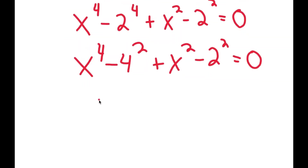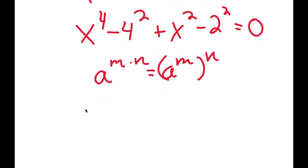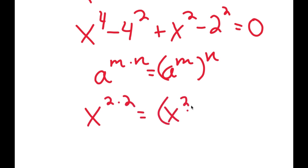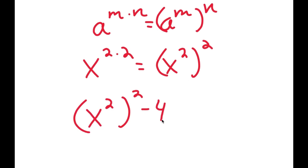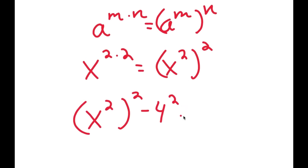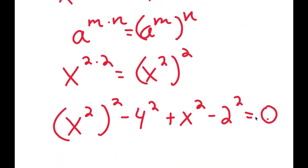Now, if I have something in the form a to the power of m times n, this is equal to a to the power of m to the power of n. So x to the power of 4 is the same thing as x to the power of 2 times 2, which is equal to x to the power of 2 to the power of 2. So now I get x to the power of 2 to the power of 2 minus 4 to the power of 2 plus x squared minus 2 squared is equal to 0.